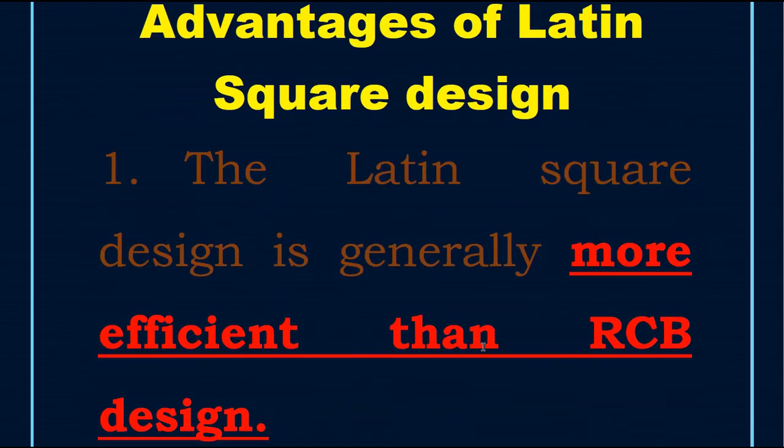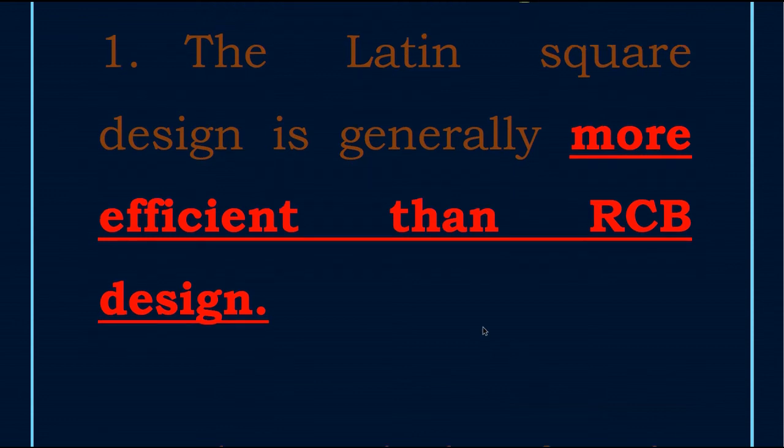First advantage is the Latin square design is generally more efficient than randomized complete block design.